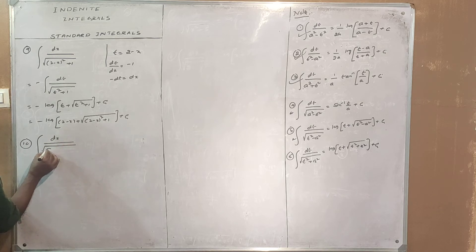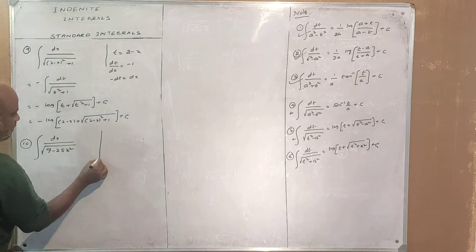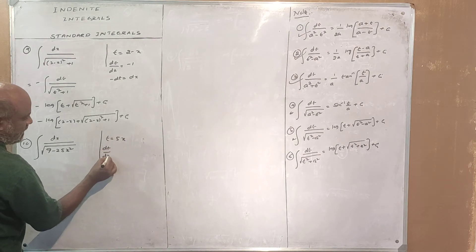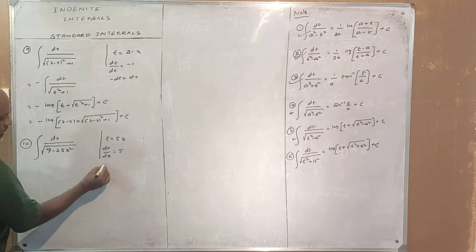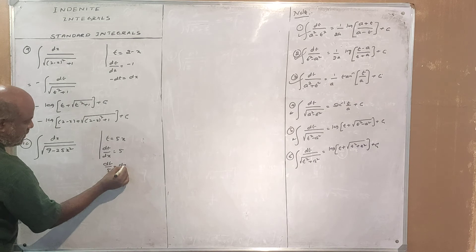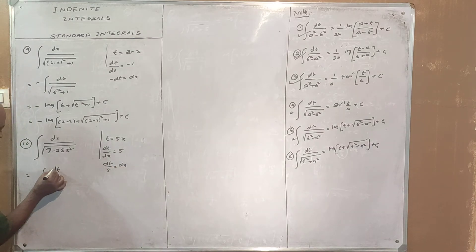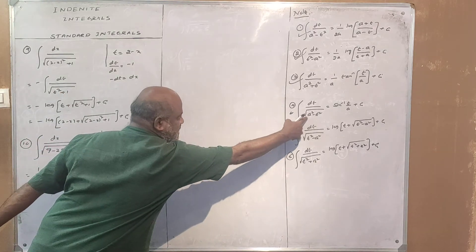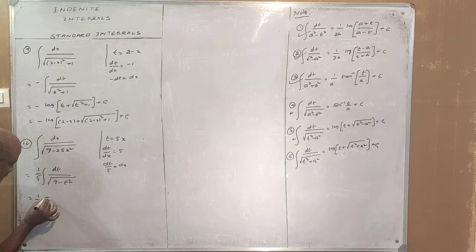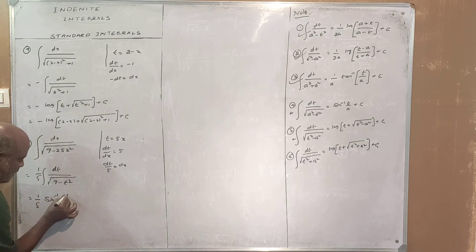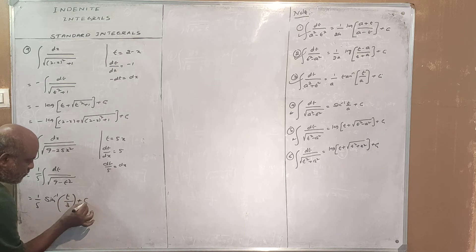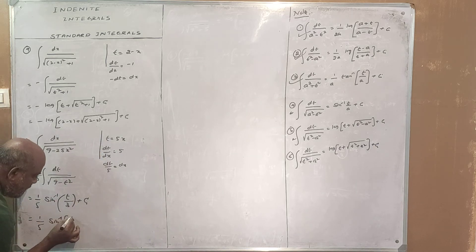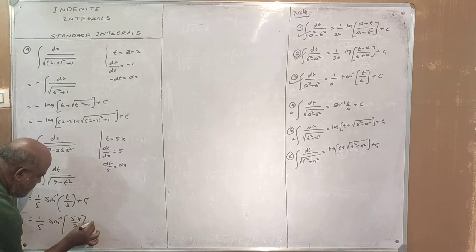Next, integral of dx divided by root of 9 minus 25x squared. Let t equal 5x, so dt divided by dx equals 5, giving dt equals 5 dx, or dx equals dt divided by 5. This reduces to the a squared minus t squared formula. The result is 1 by 5 into sin inverse of 5x divided by 3, plus C.